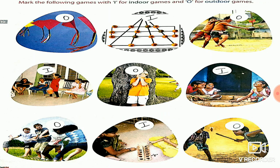On page number 10, the first activity is to mark the following games with 'I' for indoor games and 'O' for outdoor games. Observe the pictures carefully and write I for indoor games and O for outdoor games.